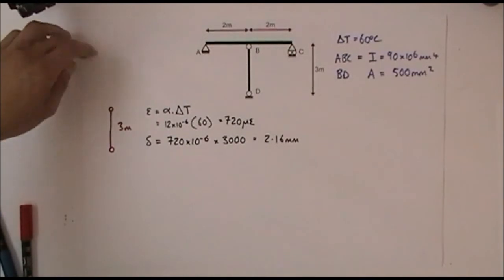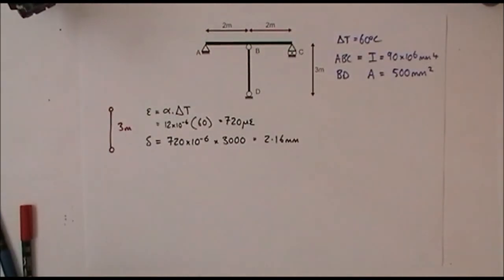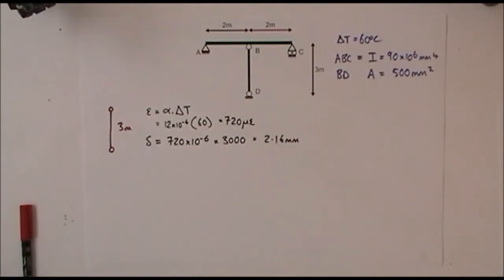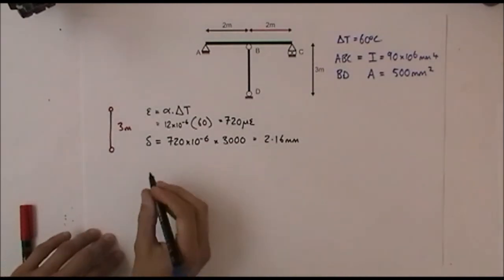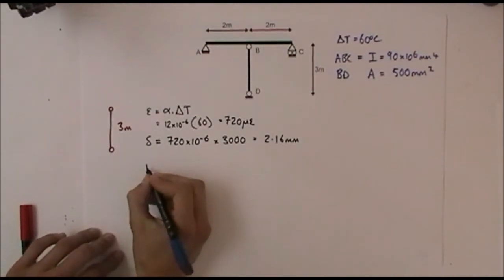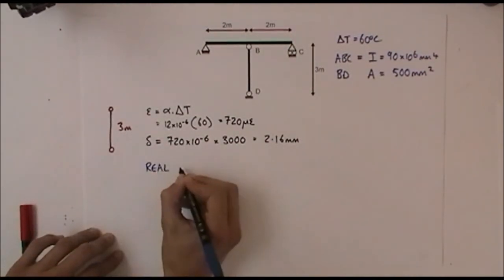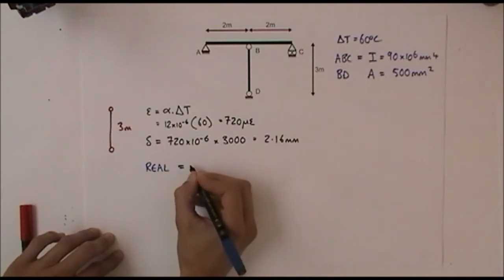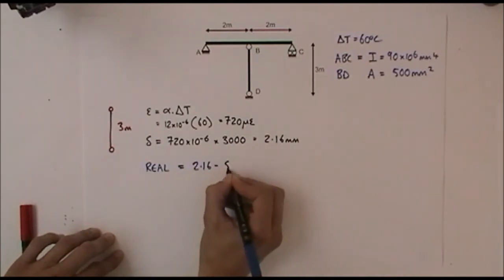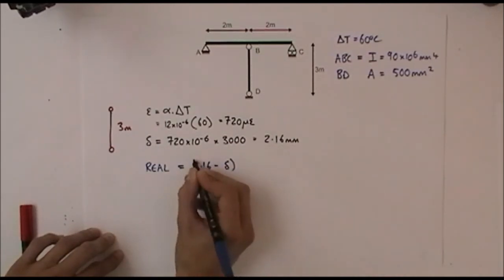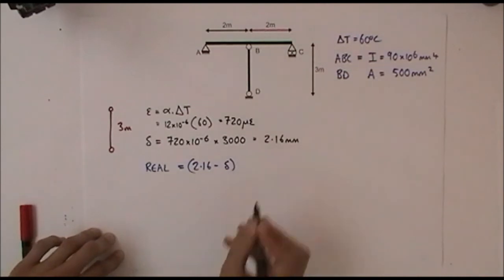However, the column can't move freely because of the beam ABC, and so the real displacement of column BD we could write as being equal to 2.16 minus delta millimetres.